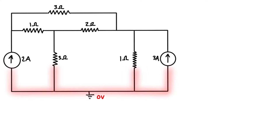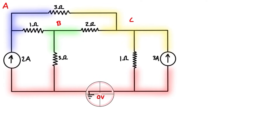Let's highlight all of the nodes a different color so it's really obvious which node is which. The blue node we'll call node A, this one node B, and the yellow one node C. So we have three nodes whose voltages we don't know — right now we only know the red node has a voltage of zero. We're going to write KCL for each of these three nodes, giving us three equations and three unknowns.